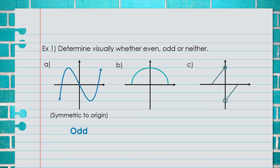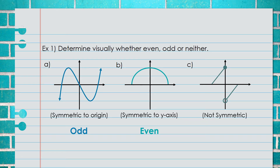For graph B, we ask: is this symmetric to the y-axis? Yes. Since it is symmetric to the y-axis, this function is even. For graph C, is it symmetric with respect to the y-axis? No. Is it symmetric with respect to the origin? Not quite — it is close, but because we have one closed circle and one open circle, it is not the same after rotating 180 degrees. Since it is not symmetric to the y-axis or the origin, this is an example of neither.